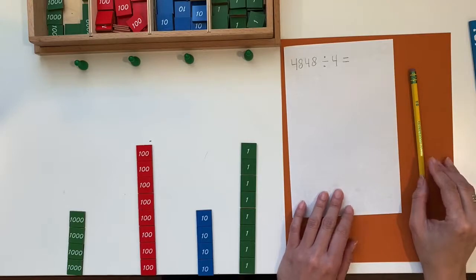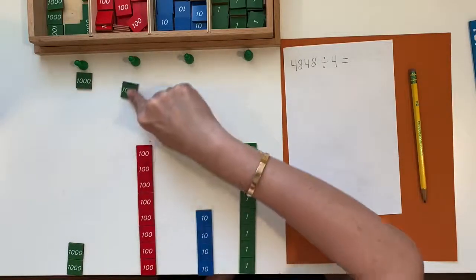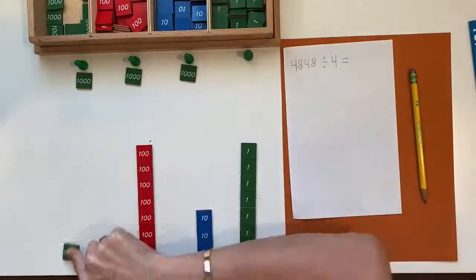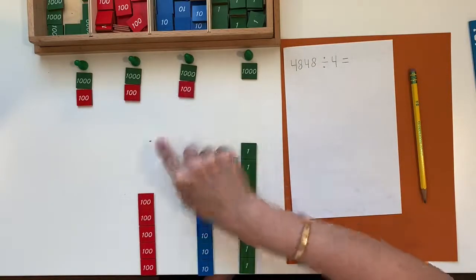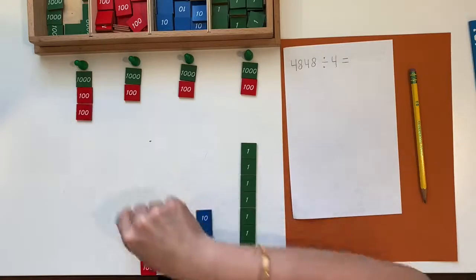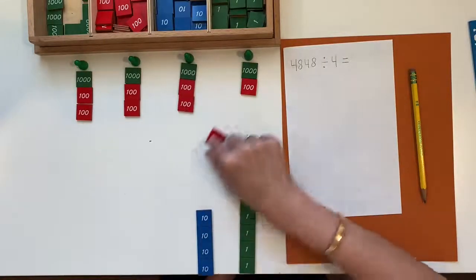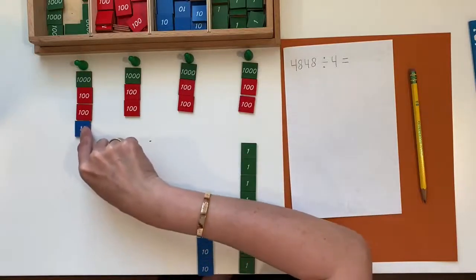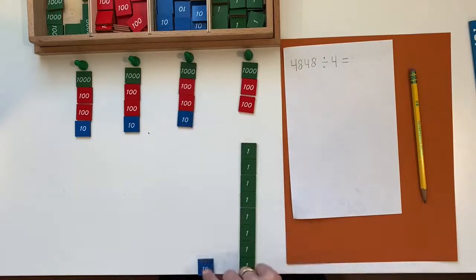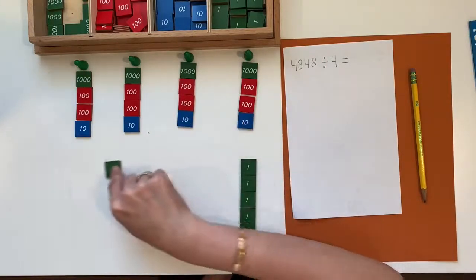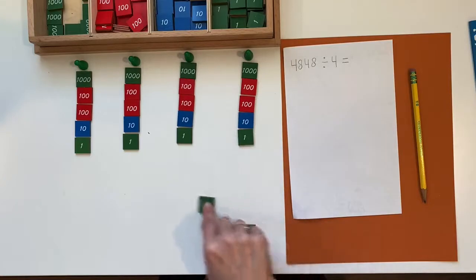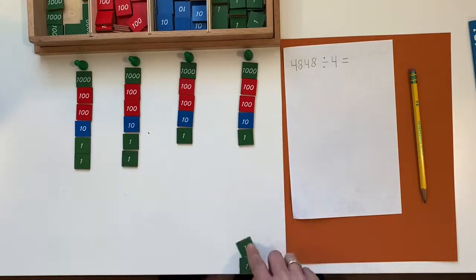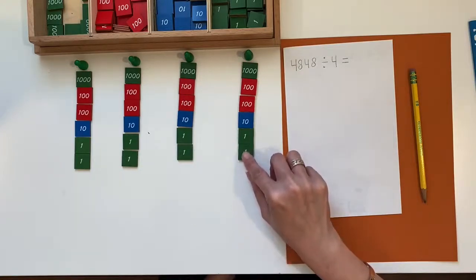When we do division, we share equally and everyone receives the same amount. One for you, one for you, one for you, one for you... sharing out all pieces equally among the 4 green skittles.